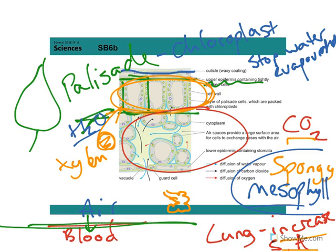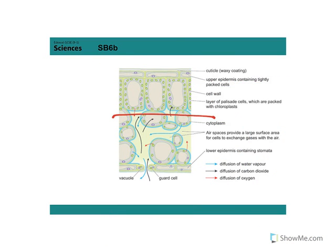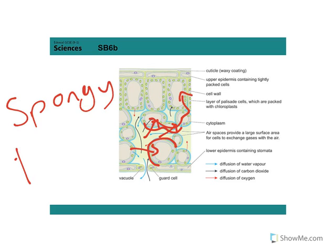And what that does is, if it was just the palisade layer at the bottom of the leaf, then carbon dioxide could get in there and there and there. But because it's a spongy layer, basically, there's gaps around all these cells. So what happens is, carbon dioxide can also get in there and there and there, and they can feed the carbon dioxide through into that layer. So the spongy layer increases the surface area, so more carbon dioxide can get into the palisade layer, so more photosynthesis can happen.